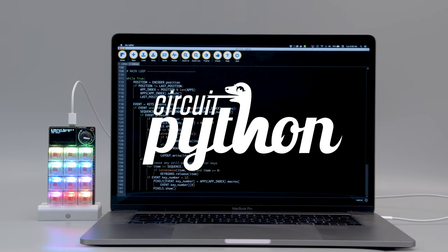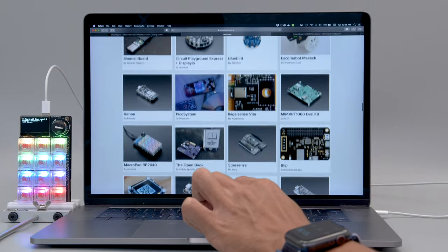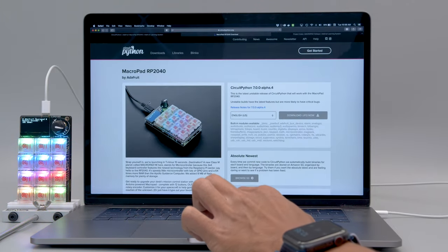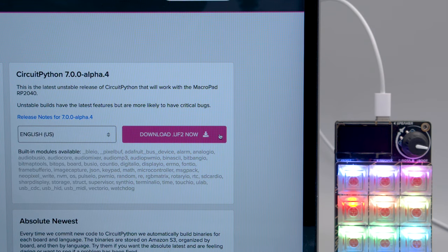CircuitPython makes it easy to create keyboard projects with the new MacroPad library. To install CircuitPython, head over to CircuitPython.org and look for the MacroPad RP2040. Choose your preferred language from the dropdown and click on the Download UF2 button.